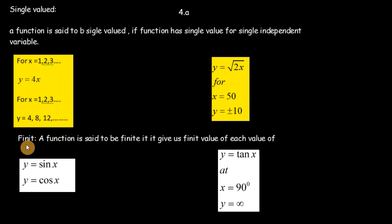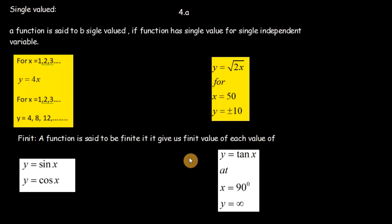Similarly, the wave function must be finite. A function is said to be finite if it gives a finite value for every value of x or θ. For example, y = sin x: whatever value we substitute for x, y never approaches infinity — it always gives a bounded value. So sin x is a finite function.